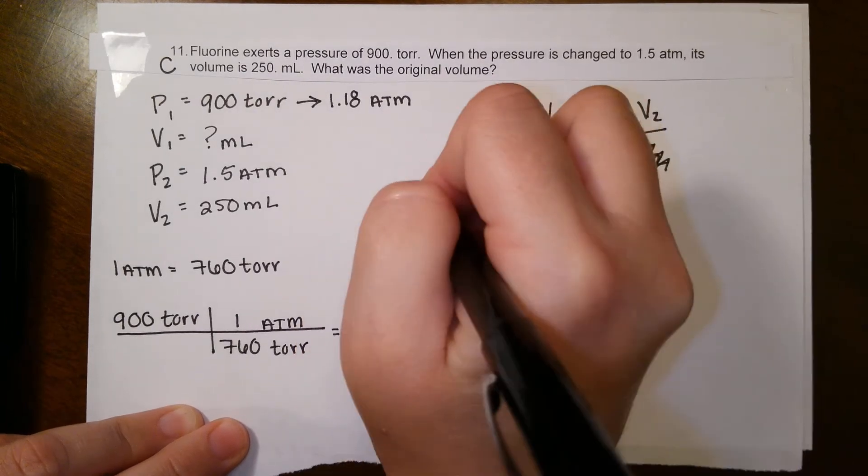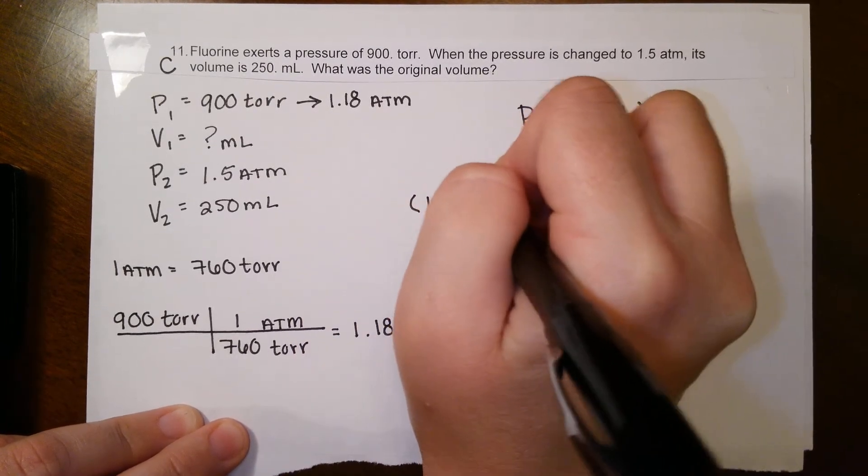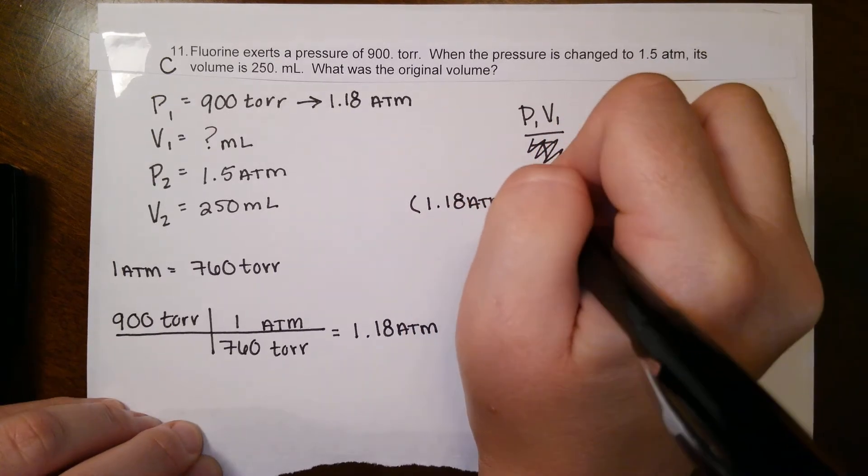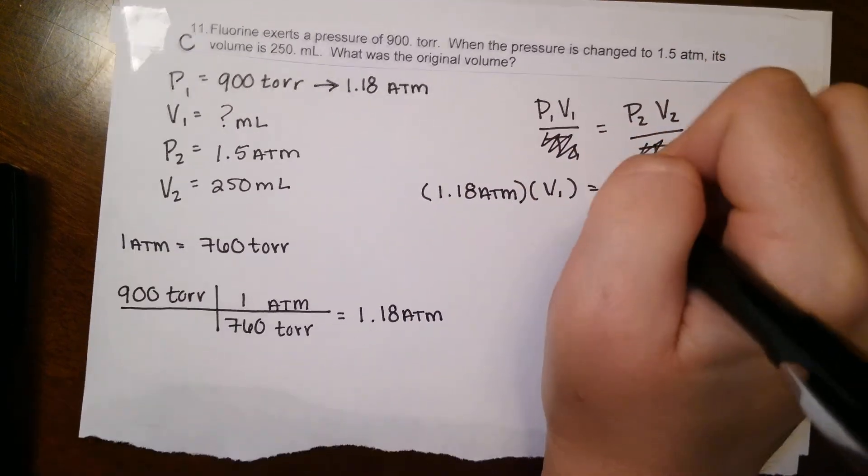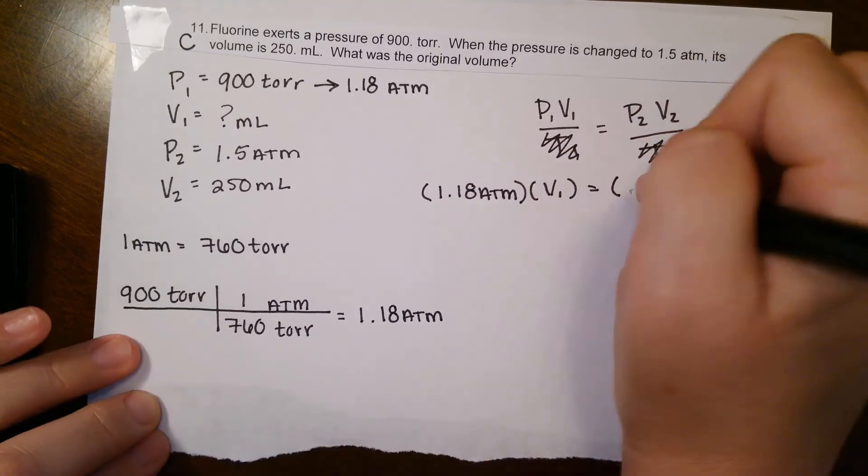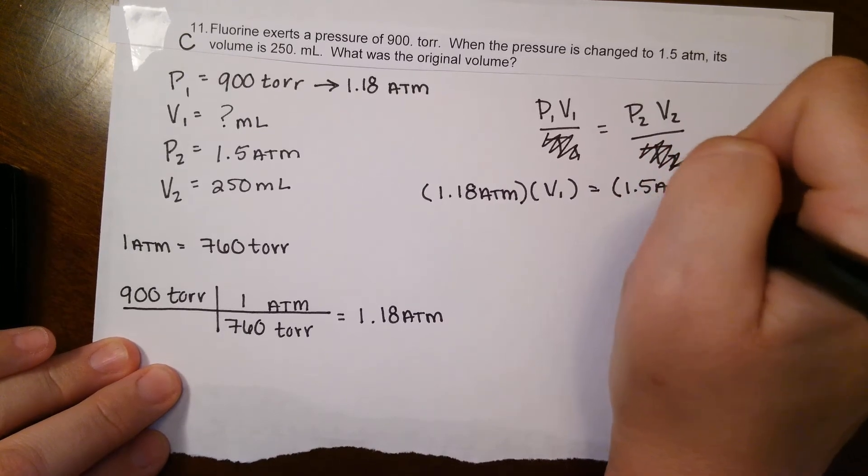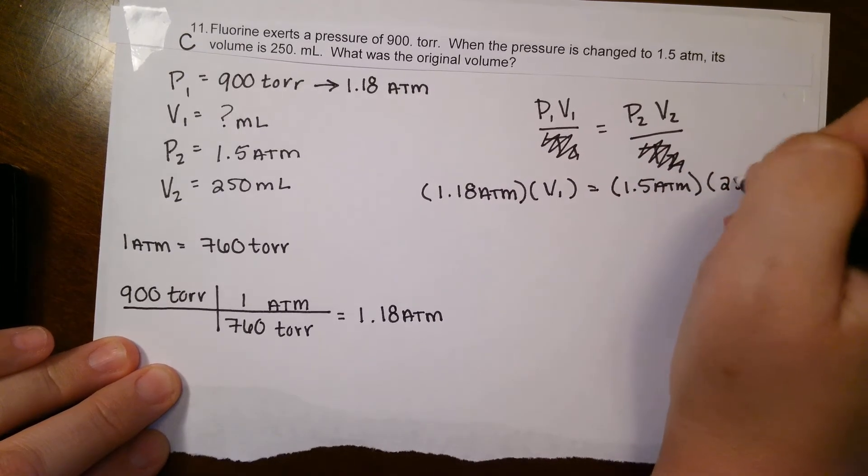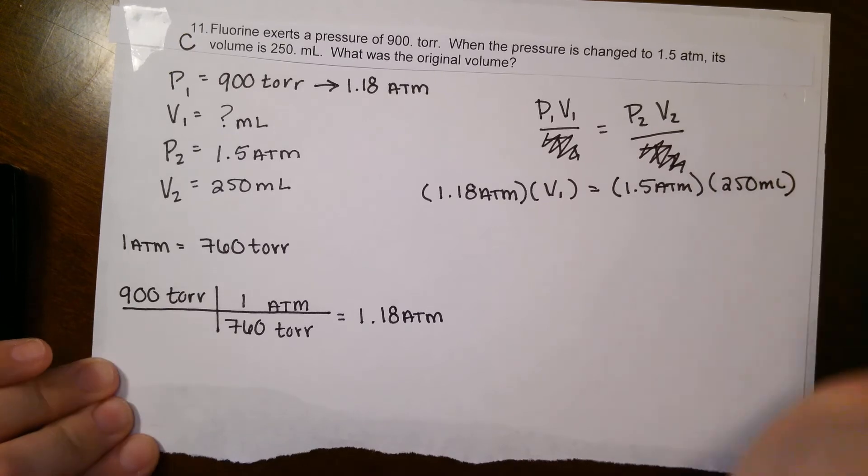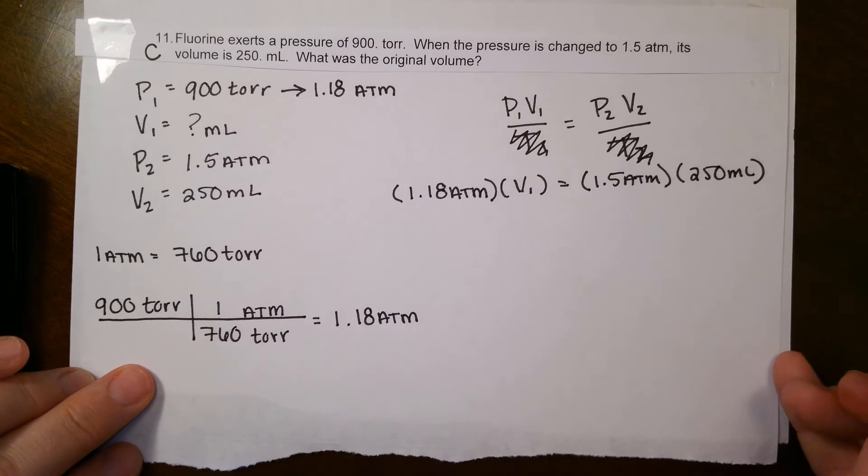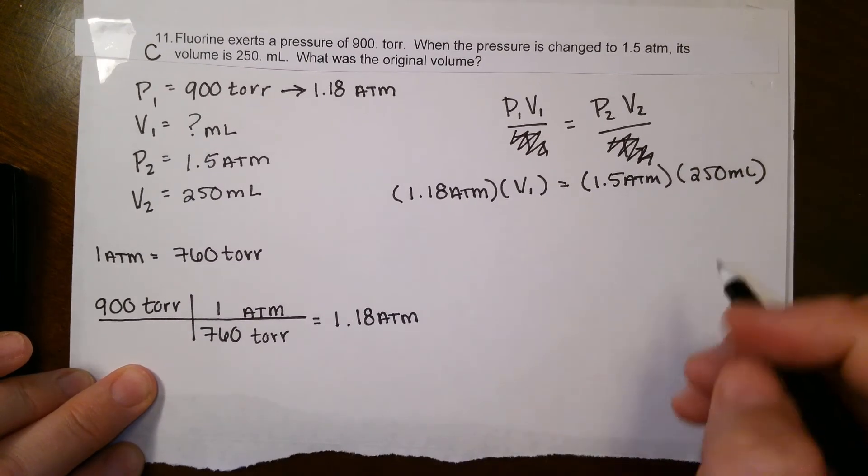So P1, we're going to use that atm measurement, 1.18 atm. The volume is our unknown, so V1 is unknown. P2 is 1.5 atm, and V2 is 250 milliliters. For this one, we want to isolate V1, get it by itself, solve for it.